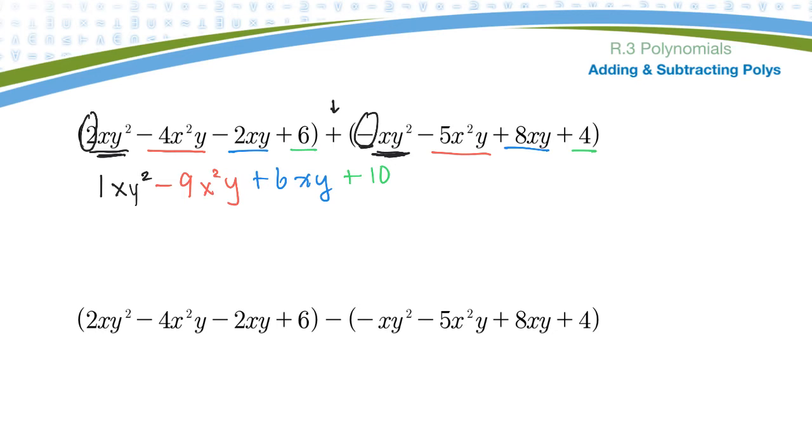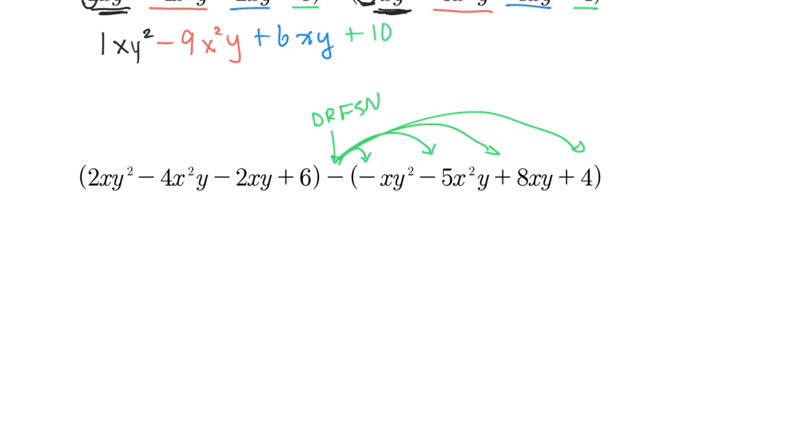If I have a subtraction in the polynomial, that is what I typically call a dirty, rotten, filthy, stinking negative. Just because students always mess that up. And what you have to do is you have to apply that negative sign to every term in the expression. And then you can collect like terms. So let's do that.